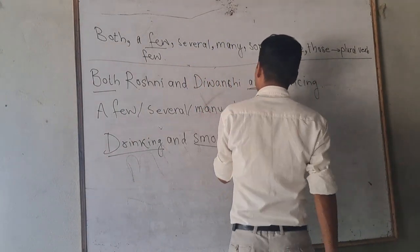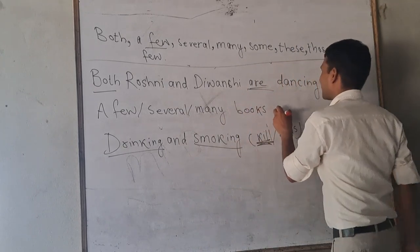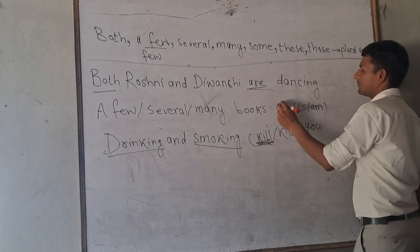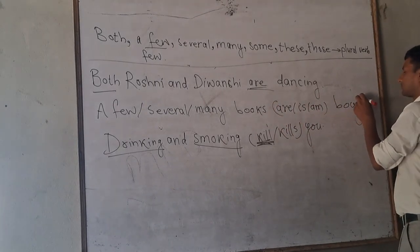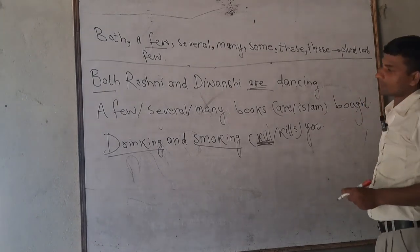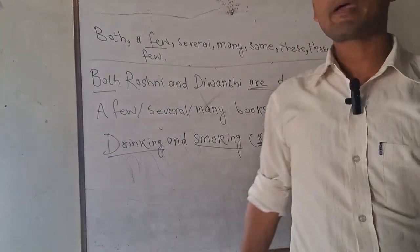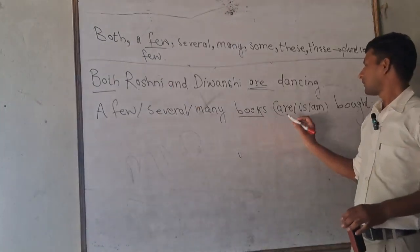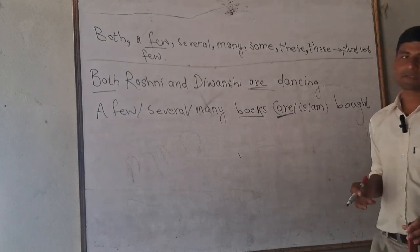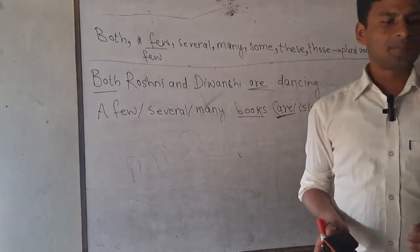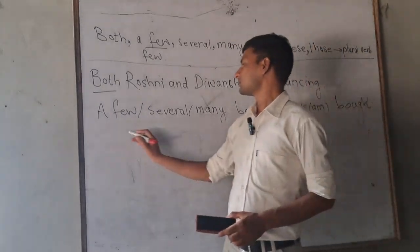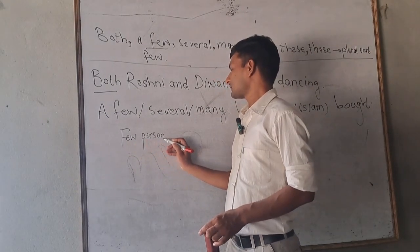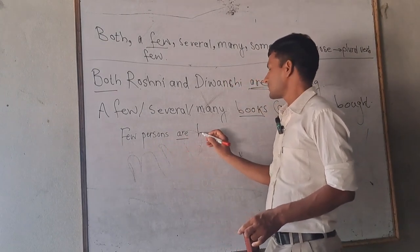Of you or several or many books are. So answer: of you, several, many, books are. Few persons are honest.